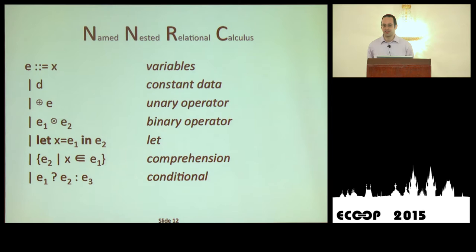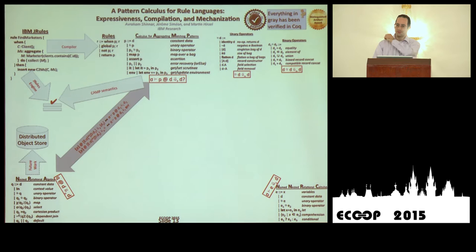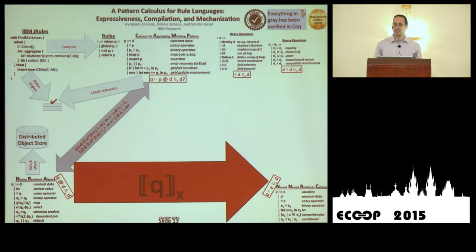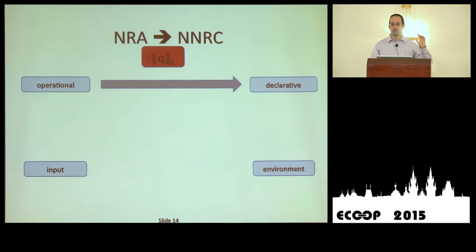NNRC is an existing language in the database community — essentially a more declarative version of the relational algebra; they are known to be equivalent. The key construct is the comprehension: for all elements in a bag E2, we transform them and create a new bag. It has a much more declarative feel compared to the operational NRA. We build a compiler from NRA to NNRC, parameterized by X — a variable name used to smuggle the NRA input into the NNRC environment, since NNRC has no explicit input but does have an environment.